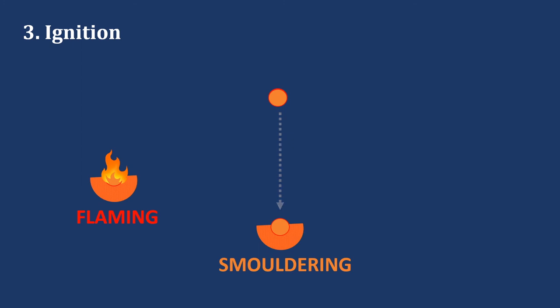When the ember lands on target fuel, different ignition scenarios may occur. The ember may ignite the target fuel with flaming combustion. It could also ignite it with glowing or smoldering combustion without any flames. In this case, the combustion can transition to flaming after some time.